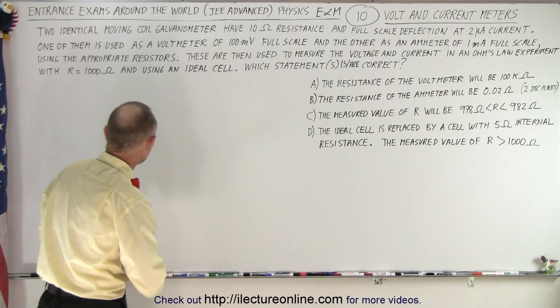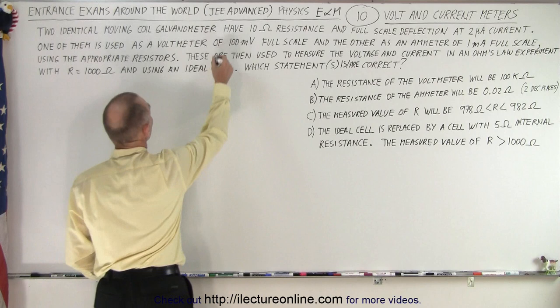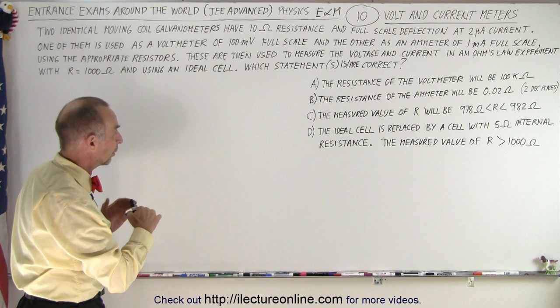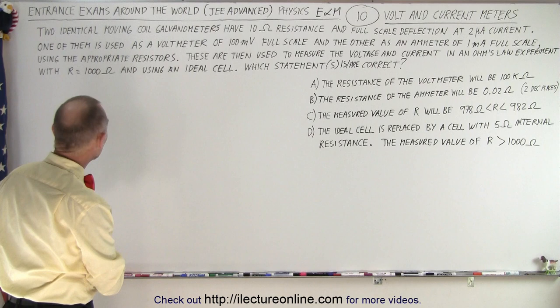So here we have the problem, let's read it first. Two identical moving coil galvanometers have 10 ohms of resistance and have full-scale deflection at two micro-amp currents. They usually require very little current to have full-scale deflection and have relatively small resistance.